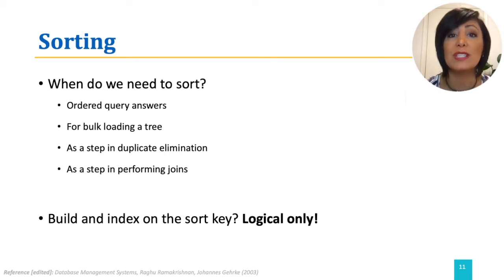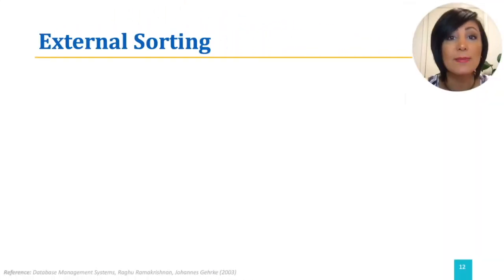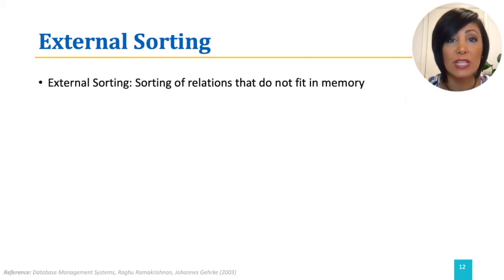We are going to discuss external merge sort as a solution for sorting relations that are larger than they can fit into the main memory. To grasp the idea behind external sorting, let's start with the simplified version of external sorting with a two-way merge sort. As mentioned, external sorting is for sorting of relations that do not fit into the memory, so a natural way of performing it is breaking it down to portions that we can deal with in the memory.